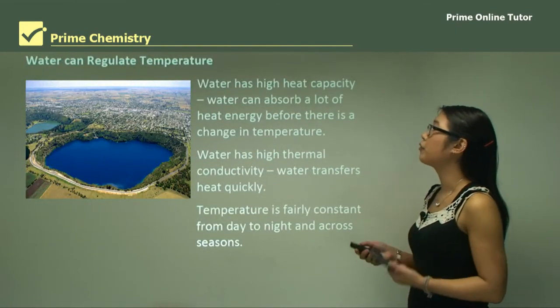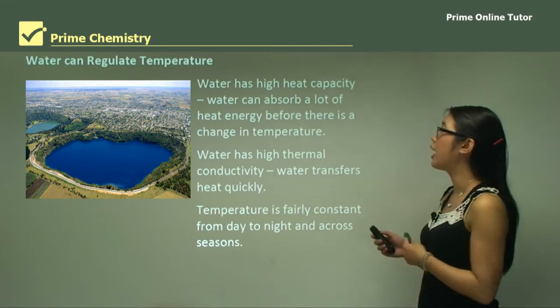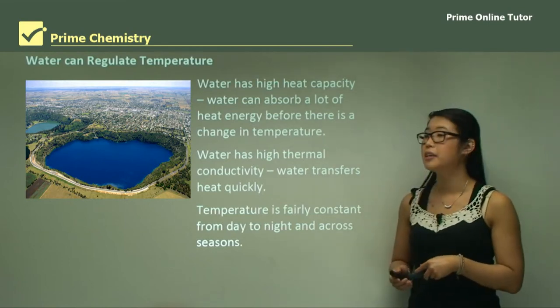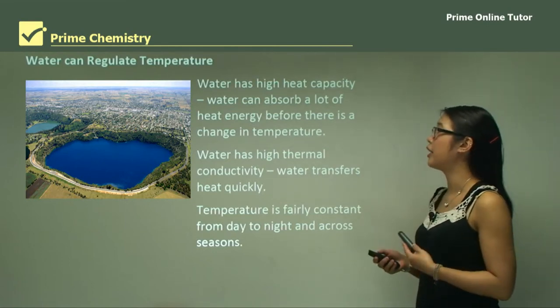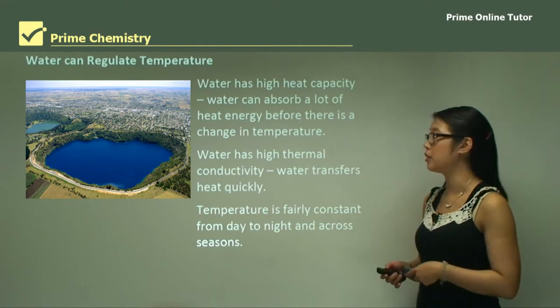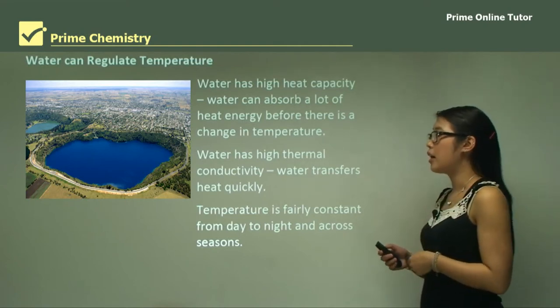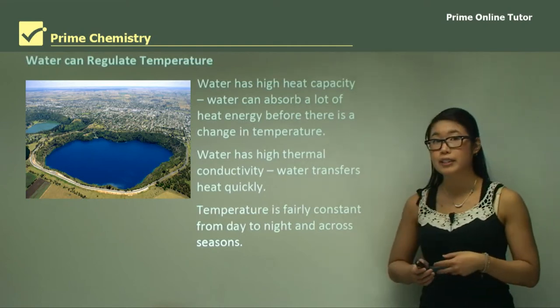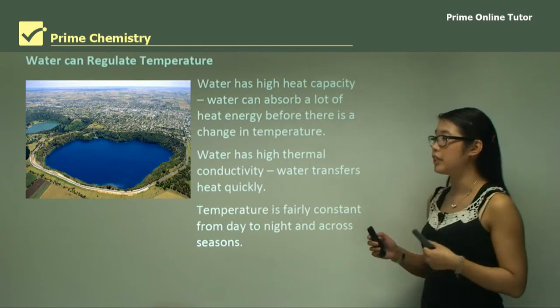Water can regulate temperature because it has a high heat capacity, which means water can absorb a lot of heat energy before there's a change in temperature. Water also has high thermal conductivity, which means that water transfers heat quickly.